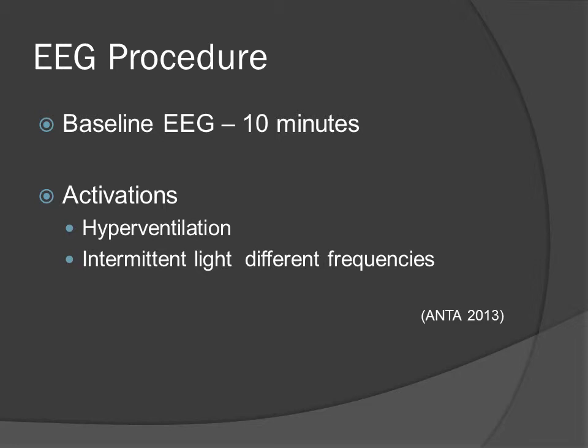A baseline EEG is performed for around 10 minutes while the patient is relaxed. To stimulate the epileptiform activity in the brain, hyperventilation is often used — the patient is told to breathe in deeply for a few minutes to achieve this. Flashing lights are also used as stimulation, and this is done over a period of time with varying frequencies.